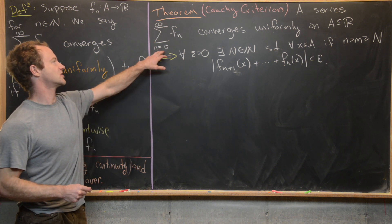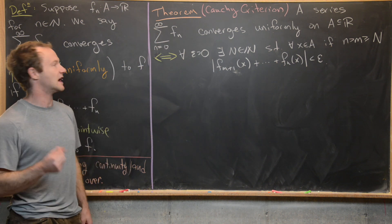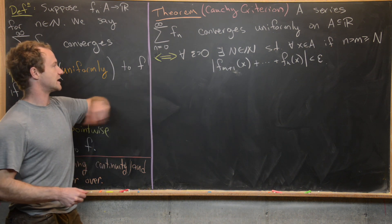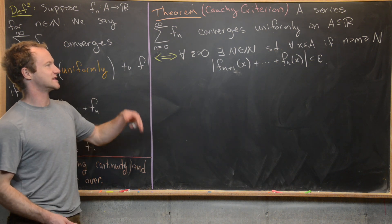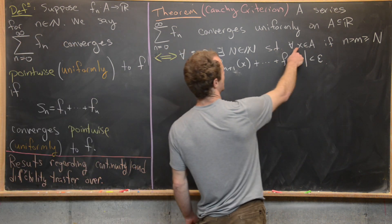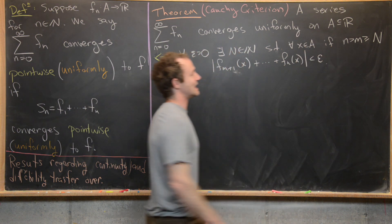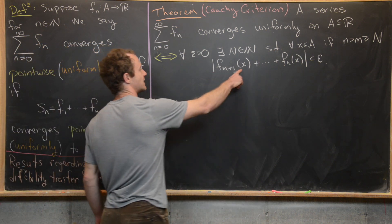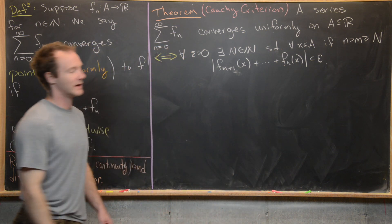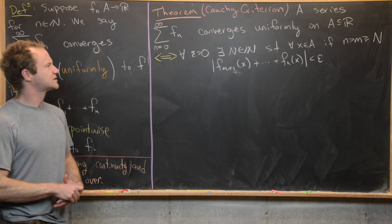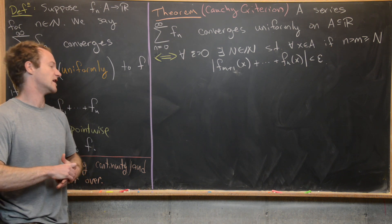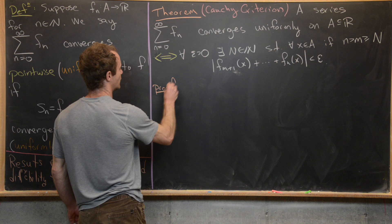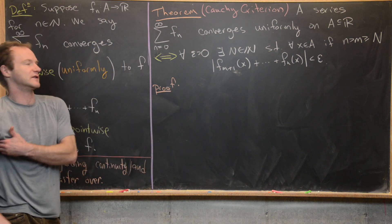The Cauchy criterion says: a series of functions — the sum as n goes from zero to infinity of f_n — converges uniformly on a set A, which is a subset of the real numbers, if and only if for all epsilon greater than zero, there exists a capital N which is a natural number, such that for all x in A, if n and m are bigger than or equal to N (with n > m), then the absolute value of f_{m+1}(x) plus all the way up to f_n(x) is less than epsilon. Compare this to the Cauchy criterion for series of numbers.